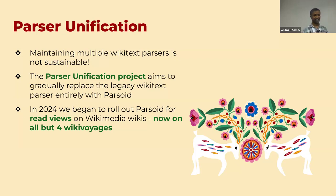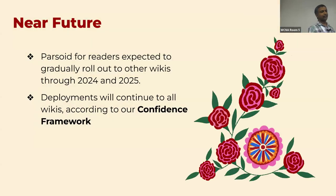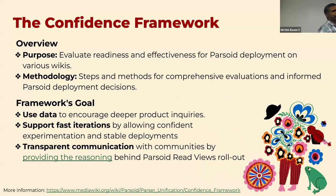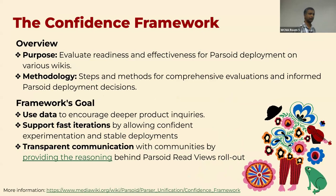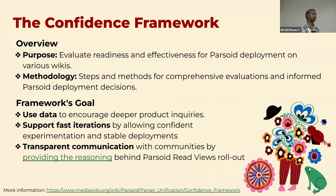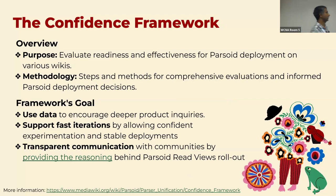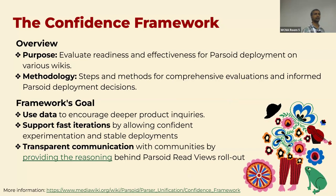In 2024, we've begun to roll out Parsoid, and the plan is to gradually roll this out through this year and next year. If all goes well, nobody should notice anything — the technology switches and everything works as before, actually better than before. We have a confidence framework for deciding how to roll out, based on a couple of metrics. One is we actually compare the rendering of a page with the current parser and with Parsoid, take a screenshot, do a diff of the screenshots, and look at how closely they match.